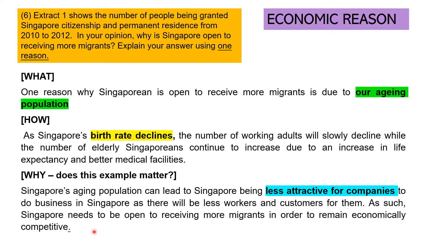Take a piece of paper and write it out. Always remember that essay writing follows the what, how, why framework. You don't have to write the labels in the real exam, but it can help guide you. The 'what' is always giving the reason. The 'how' is giving a concrete example — how does the aging population happen? And the 'why' is the link: if there is an aging population, what is the impact to Singaporeans such that we need to be open to receiving more migrants?